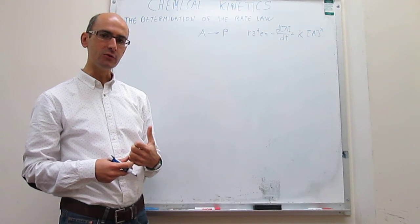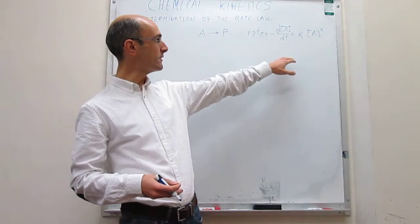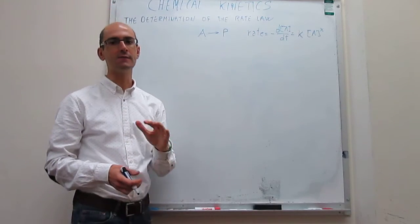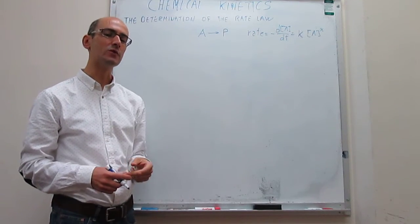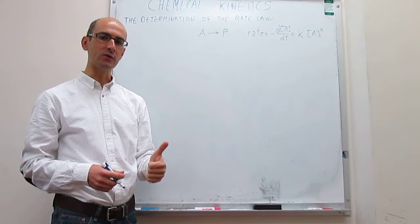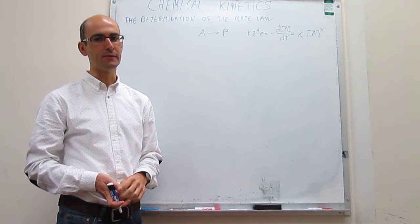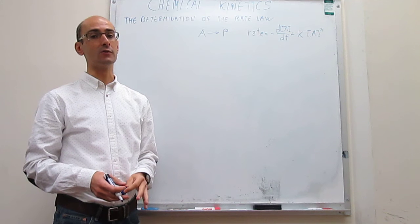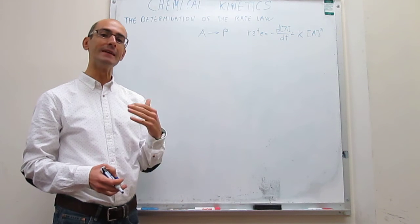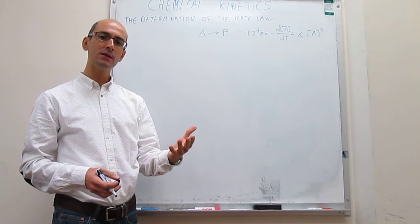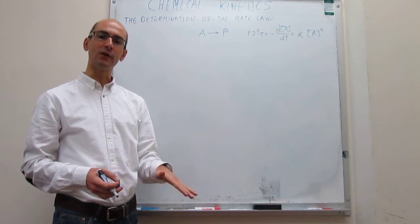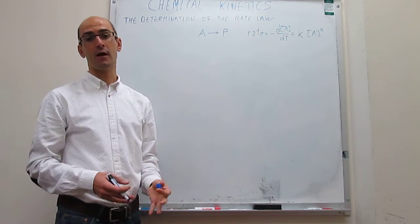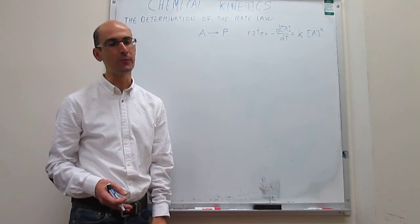What we are going to learn here is how to determine what this order x is, and what the rate constant is. In this video, we are going to see two methods to determine the rate law: first, the integration method, and then the half-life method. The integration method consists of using the integrated rate laws to see if the variation of the concentration of reagent as a function of time matches what we know for a given order.